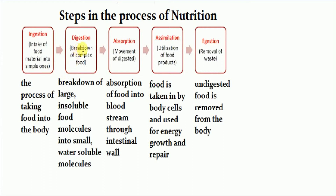The next step is digestion. The food we eat is in the form of large complex food molecules. To get it utilized by the body, the breakdown of these food molecules must take place. The process of breakdown of large insoluble food molecules into small water-soluble molecules is called digestion. In most animals, digestion takes place by both physical and chemical methods. Physical method includes grinding and churning of food in the buccal cavity or mouth, while chemical method involves addition of digestive juices containing enzymes.